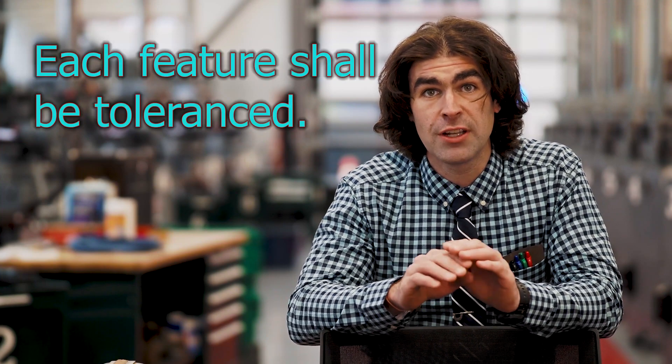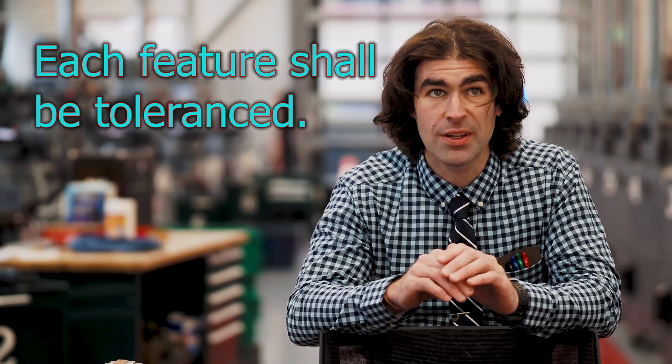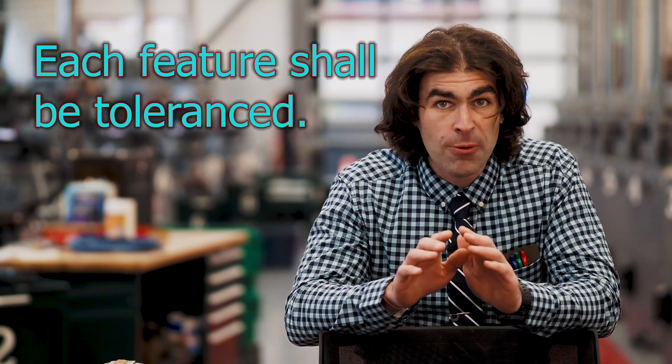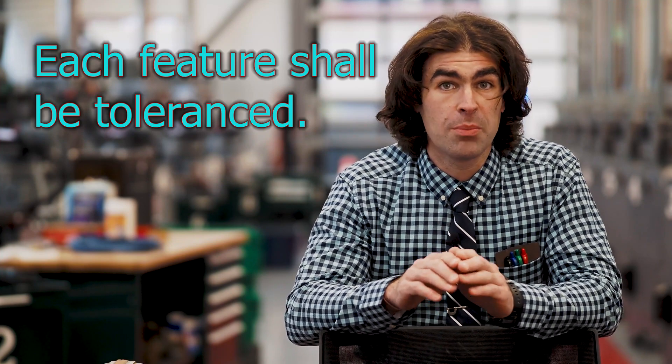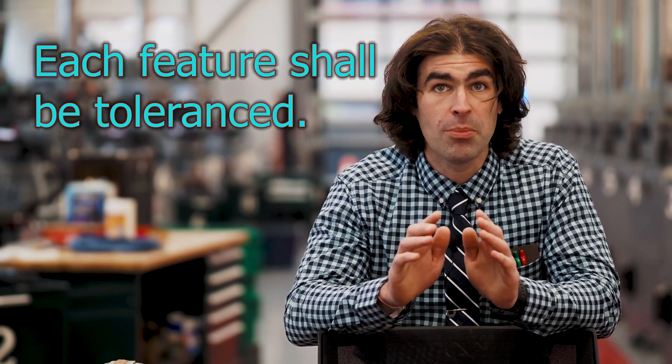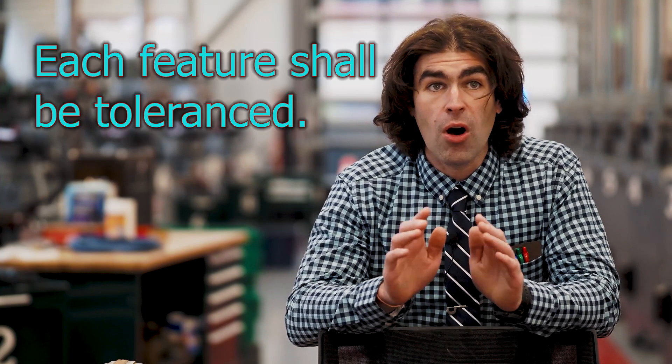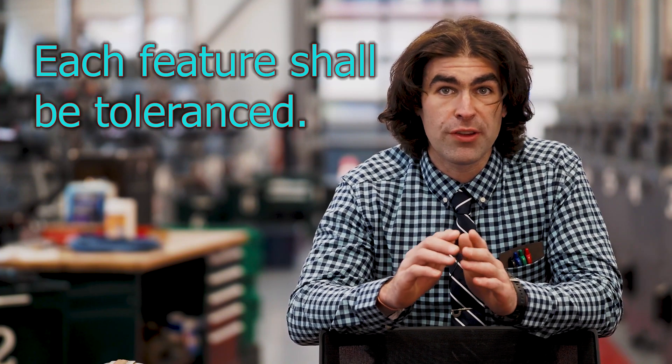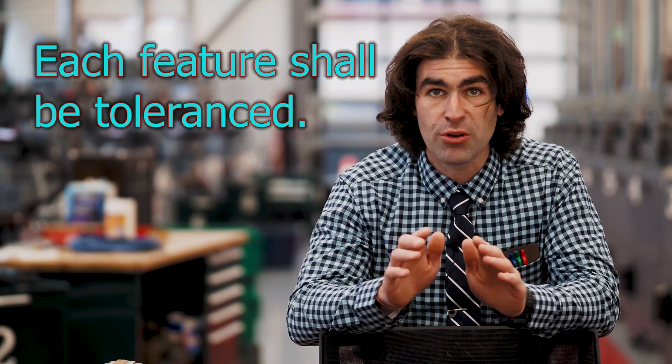So sentence one: each feature shall be toleranced. The explanation for this is shall in ASME standard means it's a mandatory requirement. There's no options. Shall means business. So all features, which a reminder, a feature is a physical portion of a part such as a surface, pin, outside diameter, or slot. So all features must not be left up to interpretation.